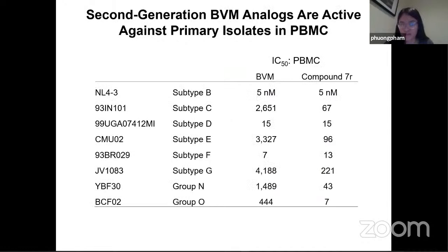We next developed IC50 assays against the primary isolates in PBMC cells. Compared to the different subtypes — B, C, D, all the way to O — compound 7R is able to potently inhibit virus activity compared to Bevirimat.